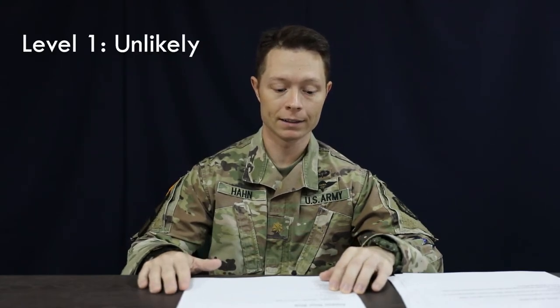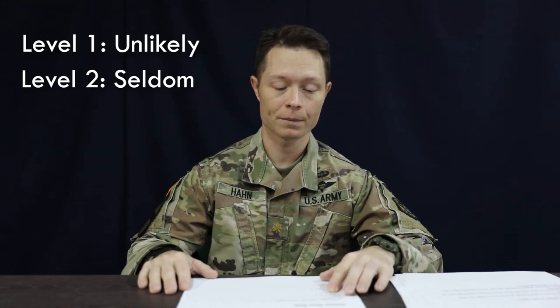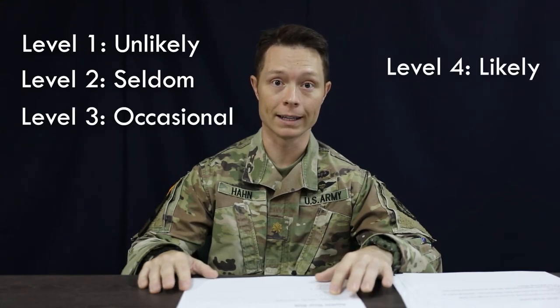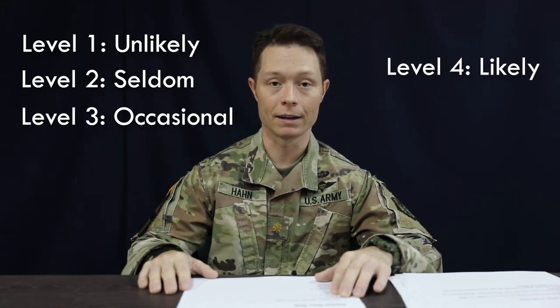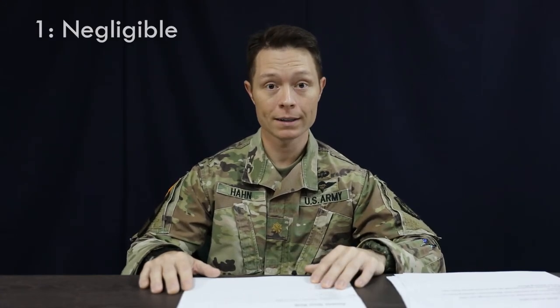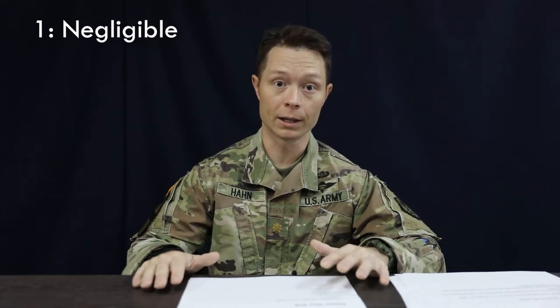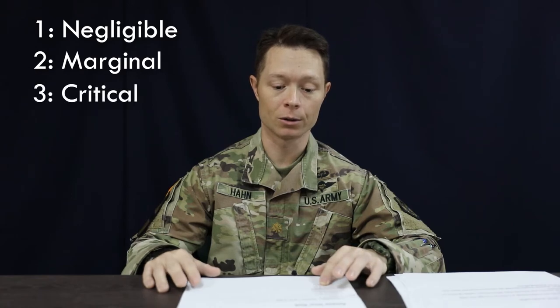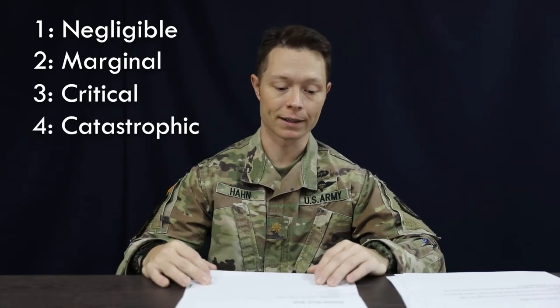As far as probability, we start out with level one, which is unlikely. Level two, seldom. Three, occasional. Four, likely. And five, frequent. Then we get into the severity of the risk. One is negligible — little to no impact. Two is marginal. Three is critical. And four is catastrophic.